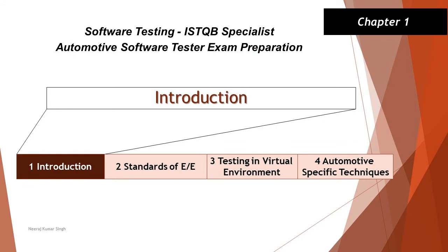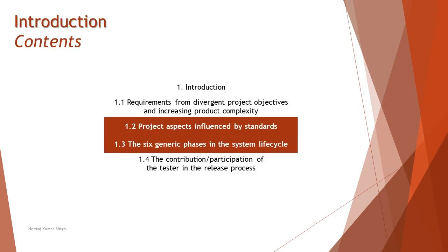Hello friends and greetings for the day. Welcome back to another tutorial on ISTQB Specialist Automotive Software Tester. As part of this tutorial we are getting into the next two topics of this chapter. As they are very small we can talk about them together — the two topics are 1.2 Project Aspects Influenced by the Standards and 1.3 The Six Generic Phases in the System Life Cycle of a Product, specific to the automobile industry.